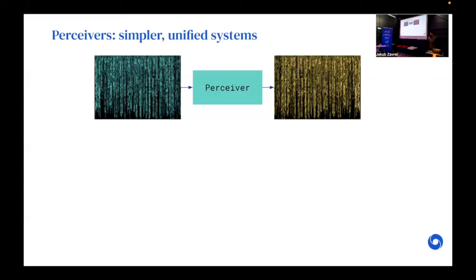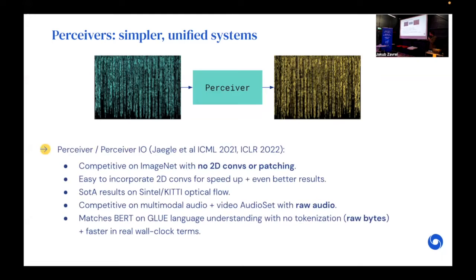We've been trying to do this in the Perceiver line of work by building on the transformer architecture but trying to fix some of the problems that limit its ability to model data we see in the world. The original work on this was in 2021 and 2022 developing the Perceiver and Perceiver IO architectures. We were able to show that with a simple architecture that replaced the self-attention at the beginning of a transformer with a cross-attention, we could get competitive results on ImageNet without having any 2D convolutions or any patching.